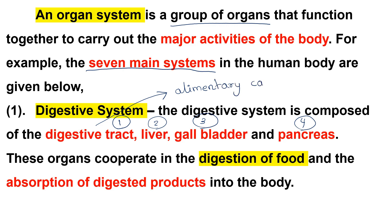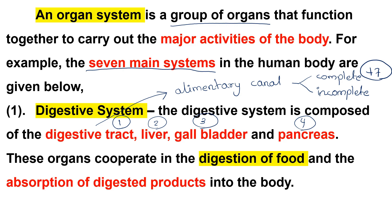The alimentary canal processes food. In higher forms of animals, the digestive tract is complete. In lower forms of animals, the digestive tract may be simpler. This organ cooperates in the digestion of food and absorption of digestive products into the body.